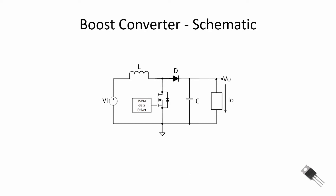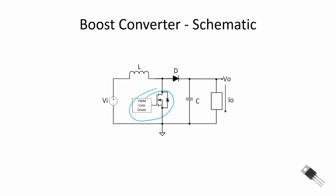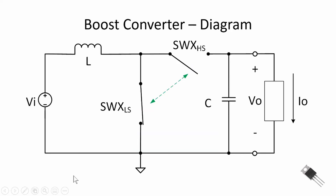Here's a schematic diagram of the boost converter with the components in place. There are a couple of things to notice: first, we have a MOSFET in a low side switch position, and we also have a diode acting as a high side switch.